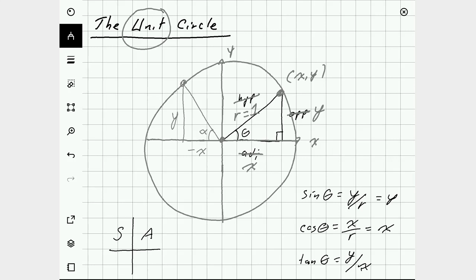In the third quadrant, x and y are both negative. So sine is negative, and cosine is negative, and tangent will be negative divided by negative, which is positive. So in the third quadrant, tangent is positive, sine and cosine are negative.